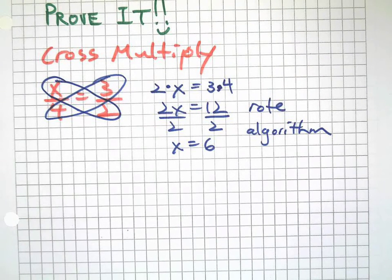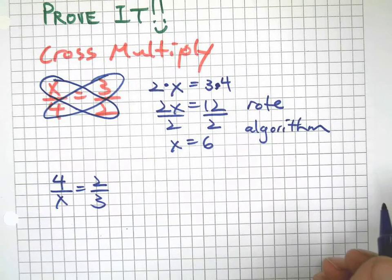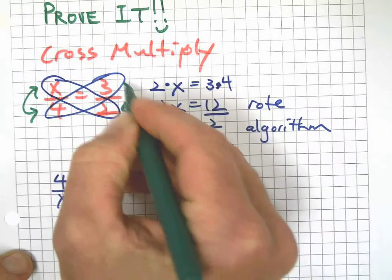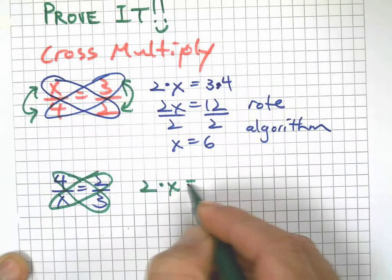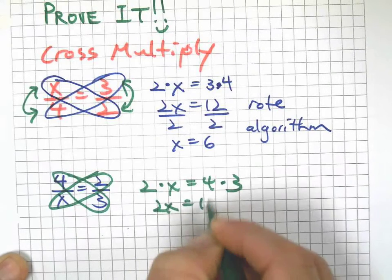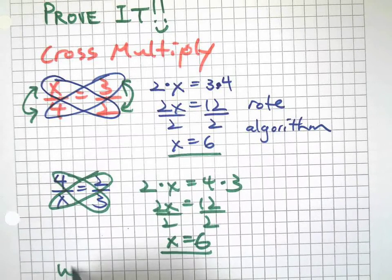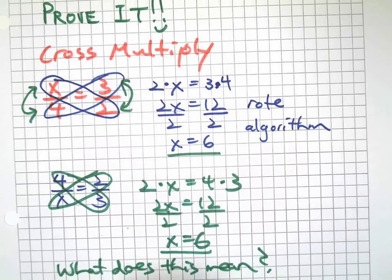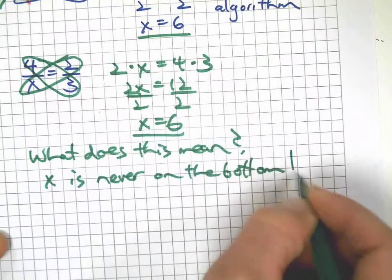Now another thing to keep in mind here, what if we take our second problem? Remember the x was on the bottom? I hope you noticed something about that. This is just simply the first problem with both things flipped upside down. Let's do our proof here though. Two times x on one side, four times three on the other, and you can tell that we're going to end up with the same answer, just like we did in my demonstration. What does this mean? It means x is never on the bottom. X is never on the bottom.